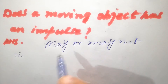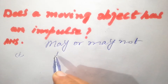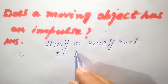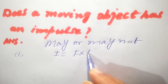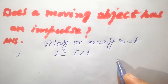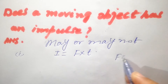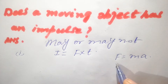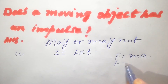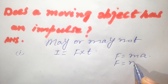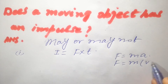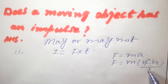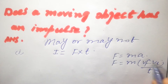In the first case, we know that impulse is equal to F into t. And F is equal to ma, where a is the acceleration. And a is equal to vf minus vi over t — that is the acceleration.